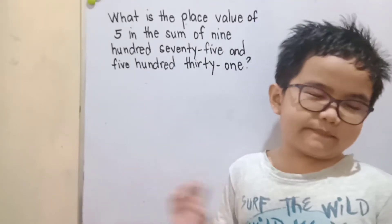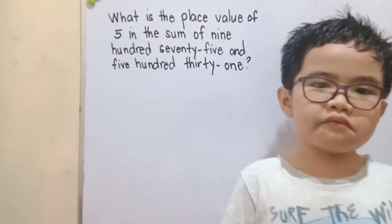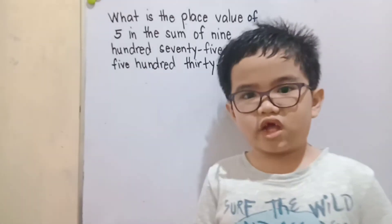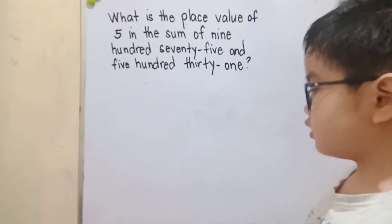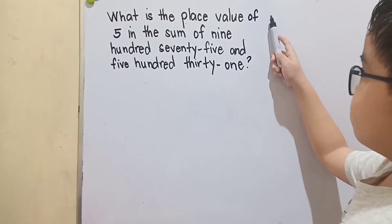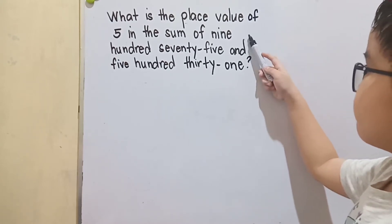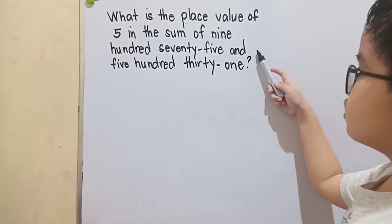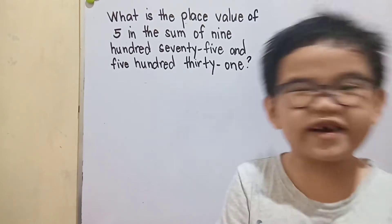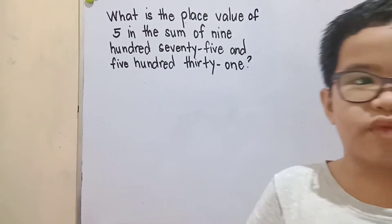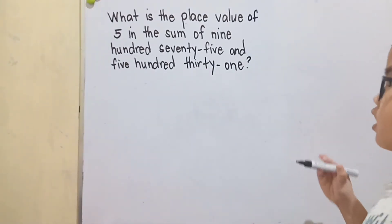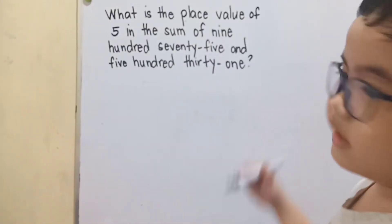Hi guys, welcome back to my channel. Now we will solve four empty problems. Come on, let's start and learn with me. This is the first problem: What is the place value of 5 in the sum of 975 and 531? Come on, let's solve it. To solve this problem, let me write 975 and 531 in symbols.